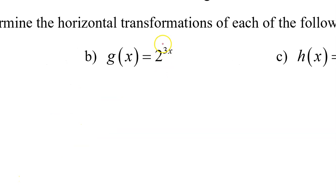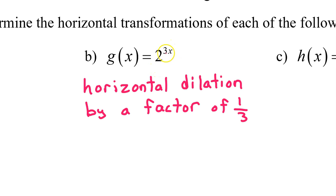Recall that multiplying on the inside of a function gave us a horizontal dilation. But horizontal transformations are always the opposite of what they appear, so multiplying by 3 on the inside gives you a horizontal dilation by a factor of 1 third. Think reciprocal.